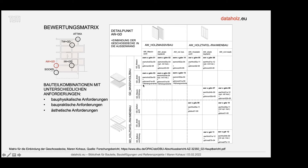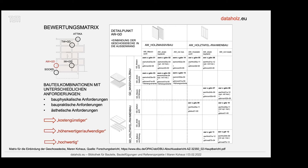Es gibt Massivholzbauteile, die miteinander gefügt werden mit sichtbar belassenen Oberflächen, dann direkt beplankte Bauteile, und dann die anspruchsvollere, weil teurere und qualitätsvollere Variante mit zusätzlichen Installationsebenen. So war unser Wunsch: für jeden sollte was dabei sein. Es gibt kostengünstigere Ausführungen, höherwertigere und aufwendigere sowie hochwertige Ausführungen.